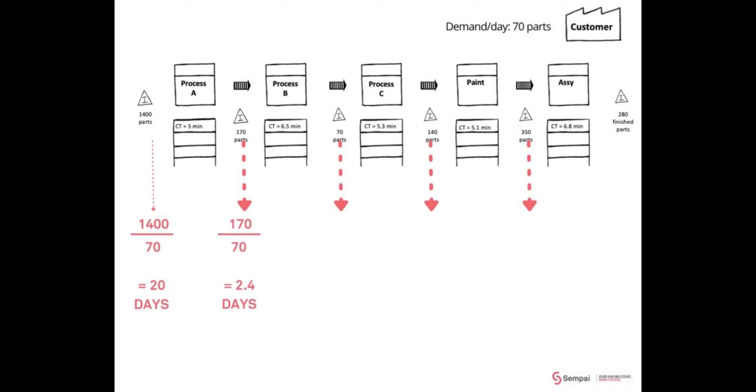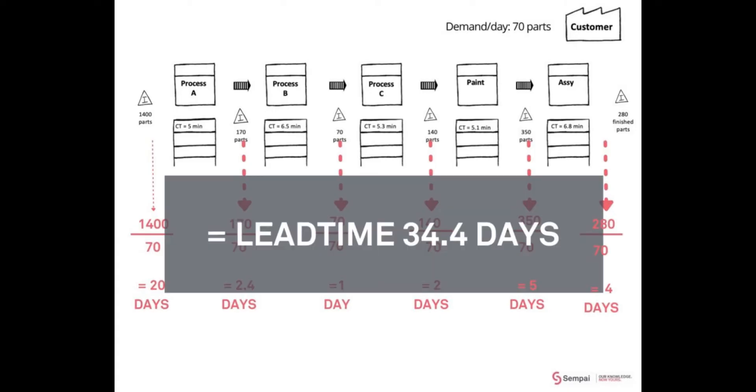So between process B and C, 70 parts of inventory divided by 70 parts demand per day—that's one day. And you can see that if you add all these up: 20 days plus 2.4 days plus 1 plus 2 plus 5 plus 4, that gives us a lead time of 34.4 days.